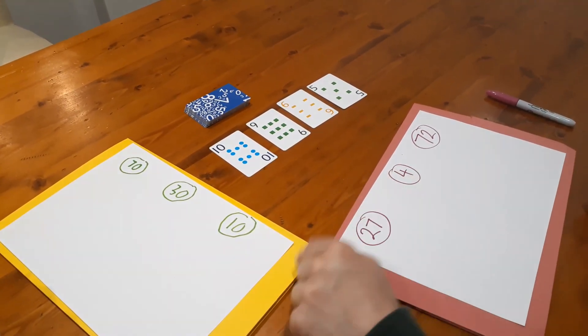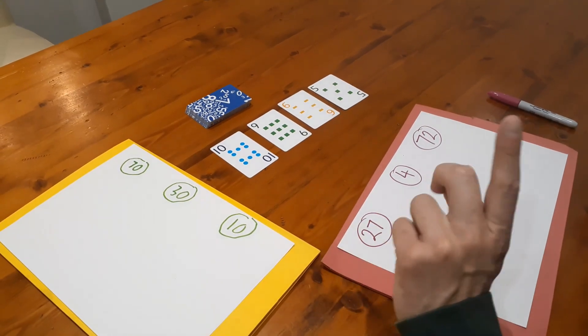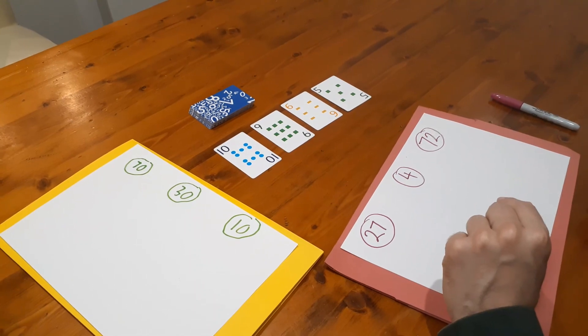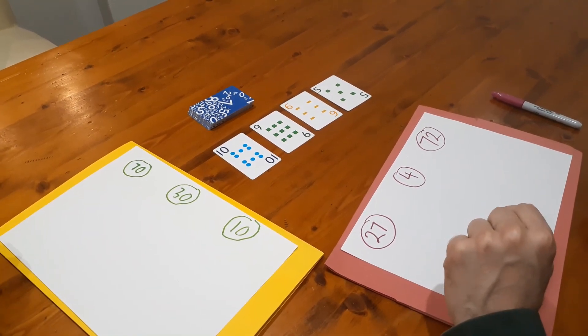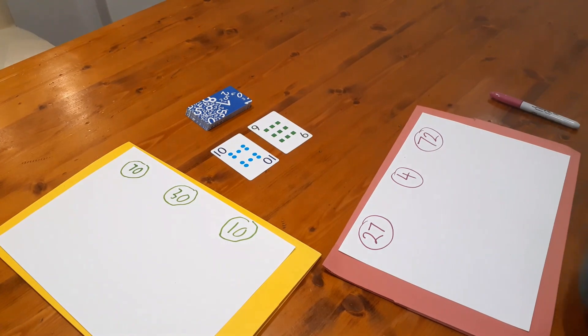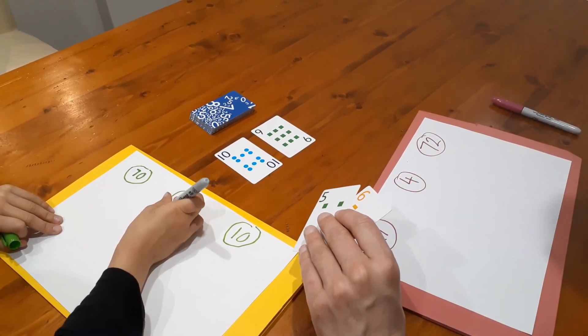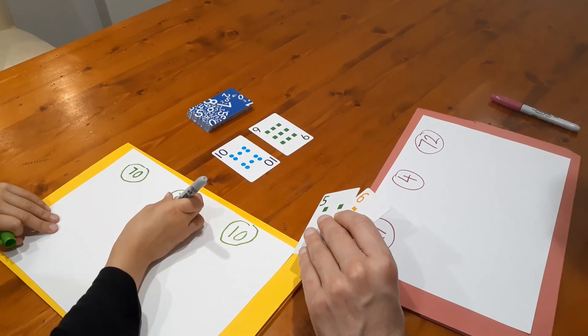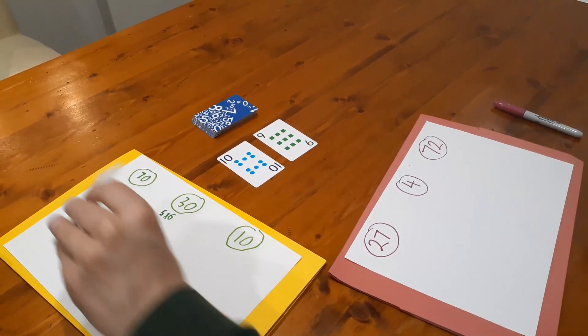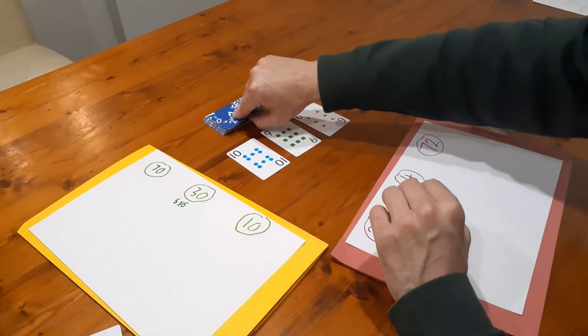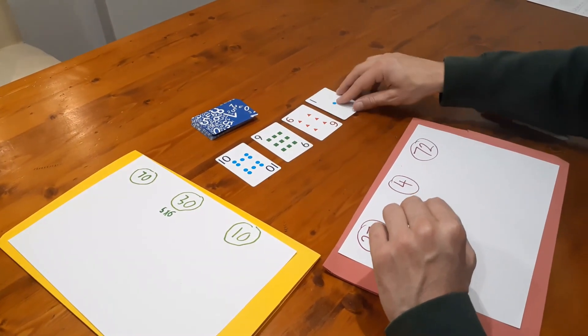Okay so now I'm looking for either a factor of one of these numbers or a pair of factors. Now I've actually got a pair of factors here. Five sixes are thirty. So Nasha underneath you're going to write nice and clear five times six. Beautiful and now Nasha keeps those two cards. We replace these two cards here and now it's Nasha's turn.